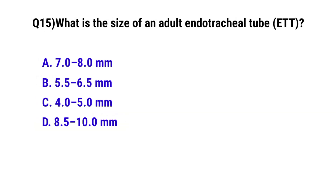Question No. 15. What is the size of an adult endotracheal tube? The correct option is A: 7 to 8 mm.